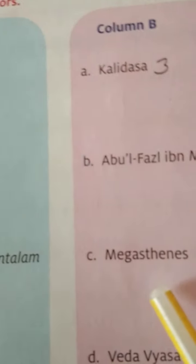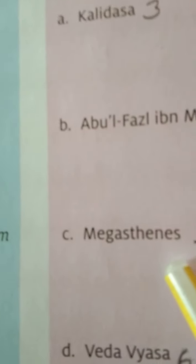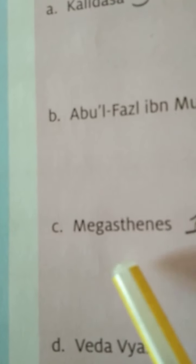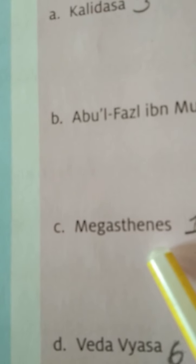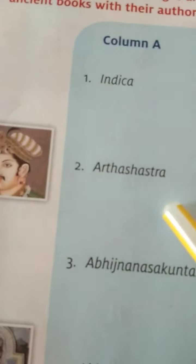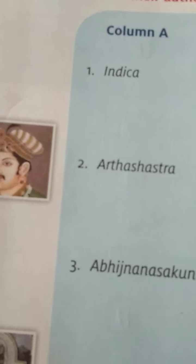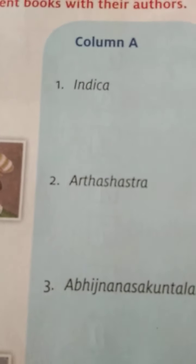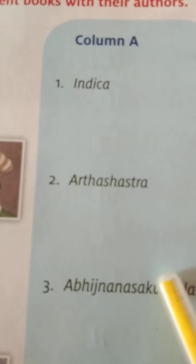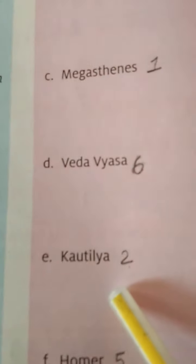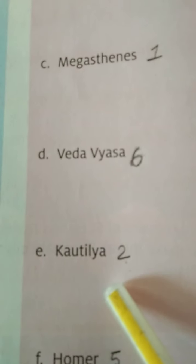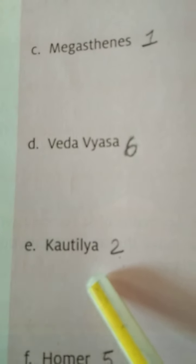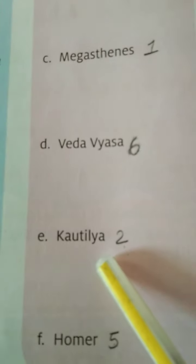The first book is Indica, and Indica is written by Megasthenes — that is the name of the author. Number two is Arthashastra — the second book is Arthashastra, and it is written by Kautilya.